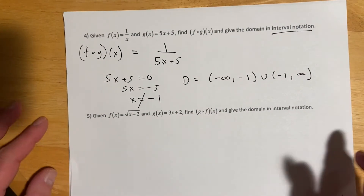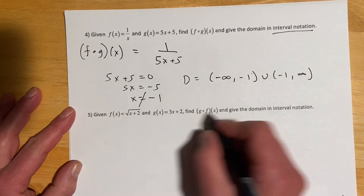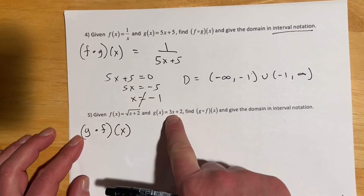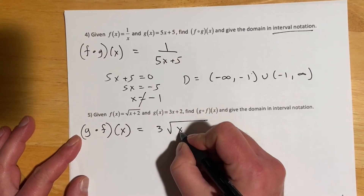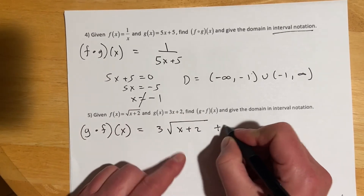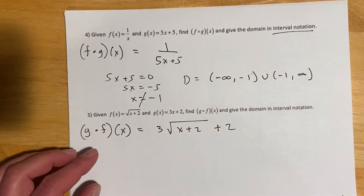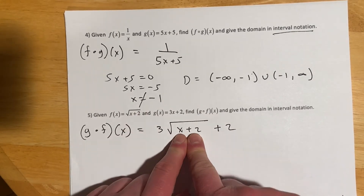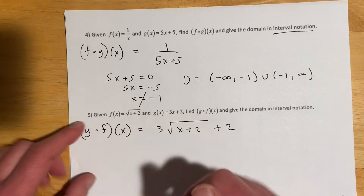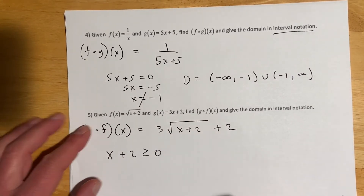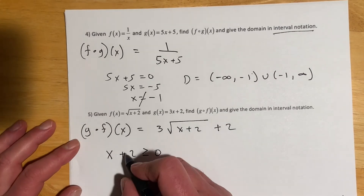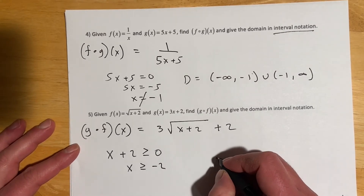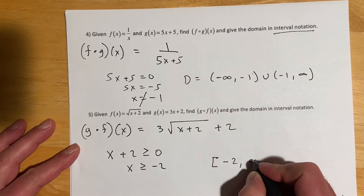For number 5, we're asked for g of f of x, so f goes into g. That looks like 3 times root x plus 2, plus 2, where the outer plus 2 came from g. The restriction comes from f: x plus 2 must be greater than or equal to 0, otherwise we get imaginary numbers. Solving gives x greater than or equal to negative 2, so the domain in interval notation is negative 2 to infinity.